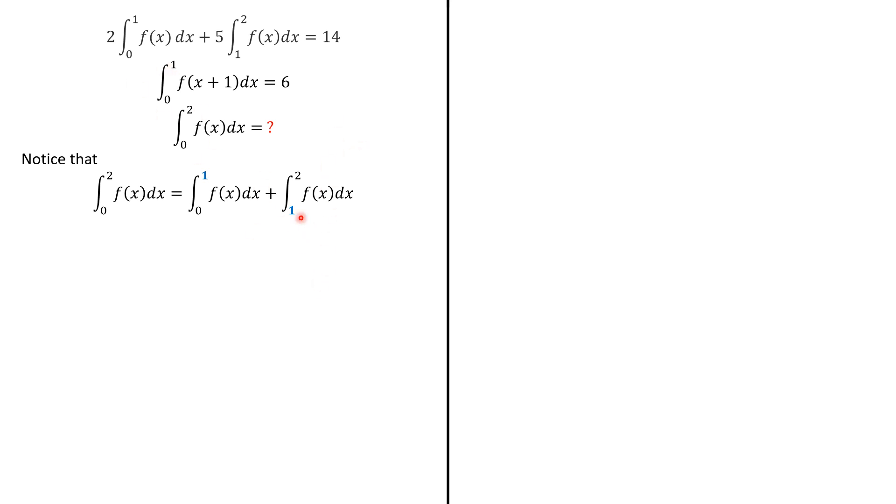So to do this, we're going to exploit this condition. We just have to perform a simple substitution, setting u equal to x plus 1, and then du is dx. And u will go from 1 to 2. So this integral here becomes the integral from 1 to 2 of f(x) dx. But since u is a dummy variable, we can just write the integral from 1 to 2 of f(x) dx, which is this one, equals 6.